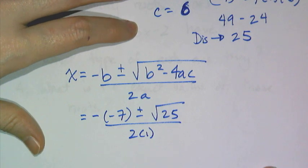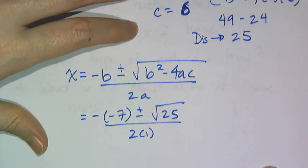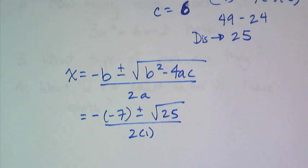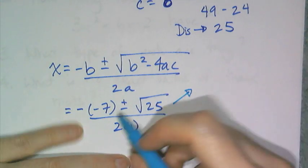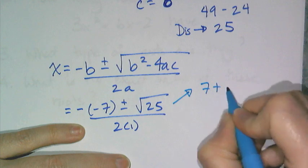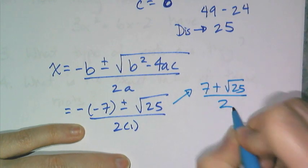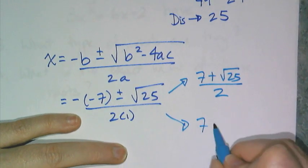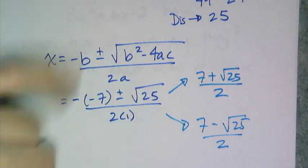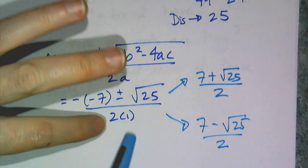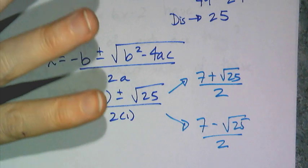And now what this becomes is an order of operations problem, which you can either do by hand or you can use your calculator. The thing to remember though is that this is really going to give me two answers, because this is really two formulas that have been squished together. One version of the formula, and I'm going to simplify it a little bit, is going to be 7 plus the square root of 25 over 2. And the other is going to be 7 minus the square root of 25 over 2. And these are two very distinct answers. You just can't type in one of these expressions and make one positive and make one negative. That doesn't work that way.